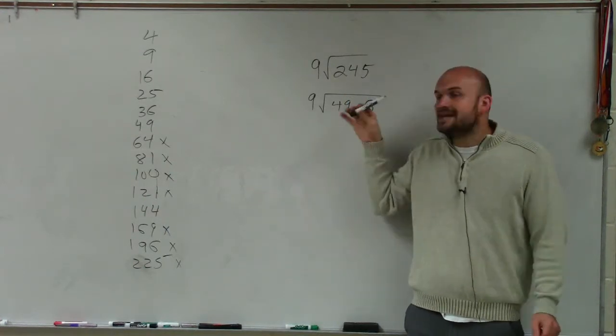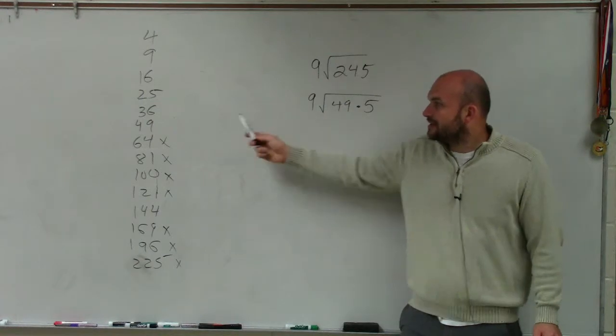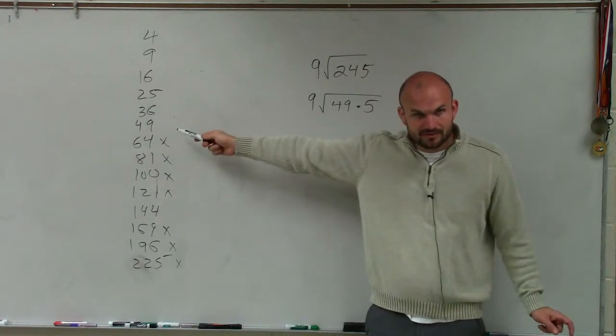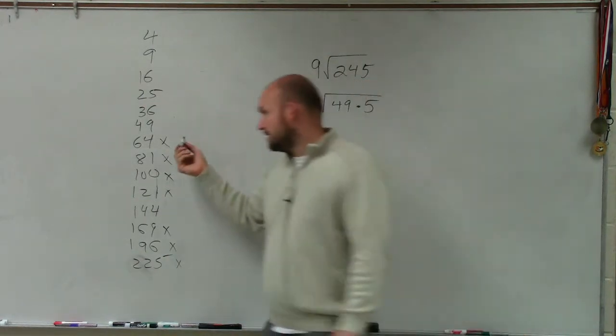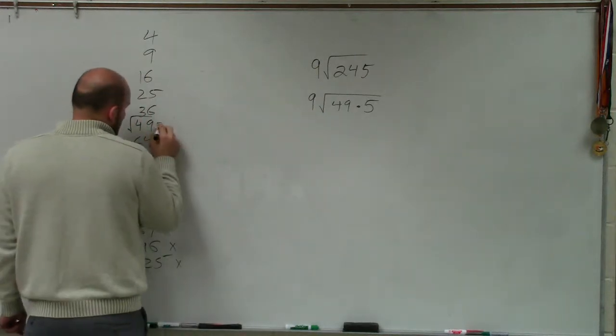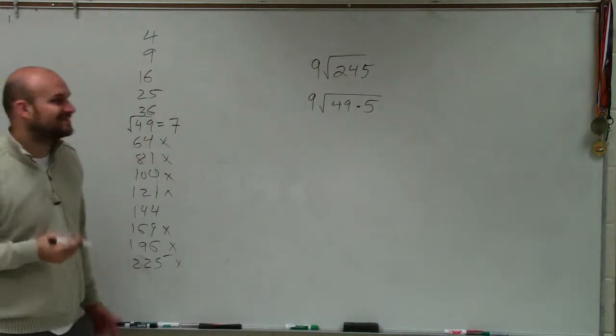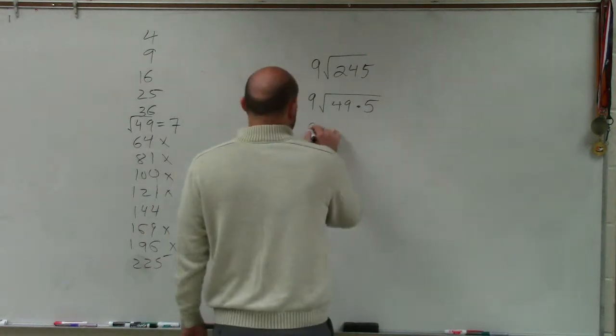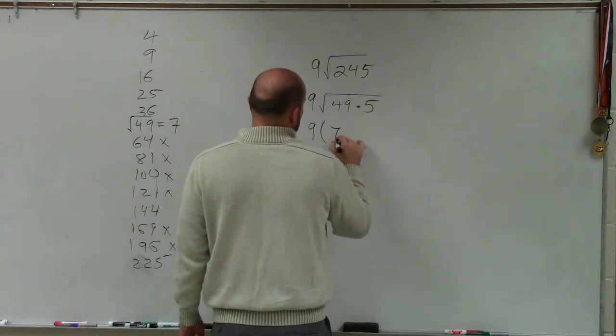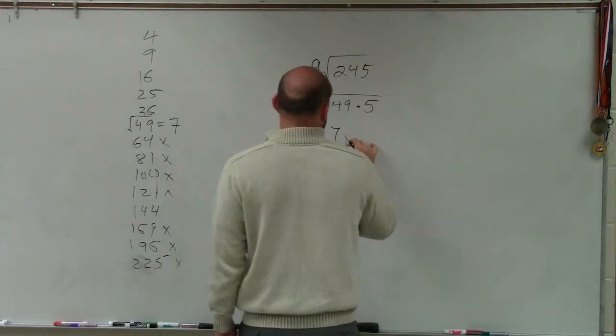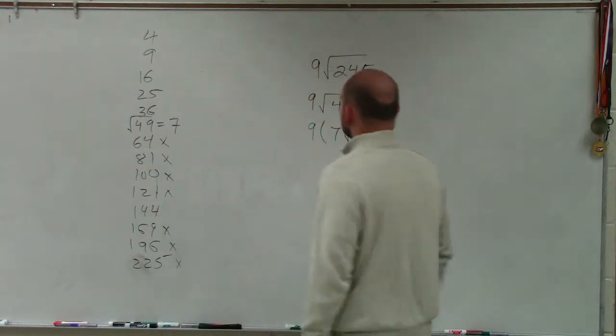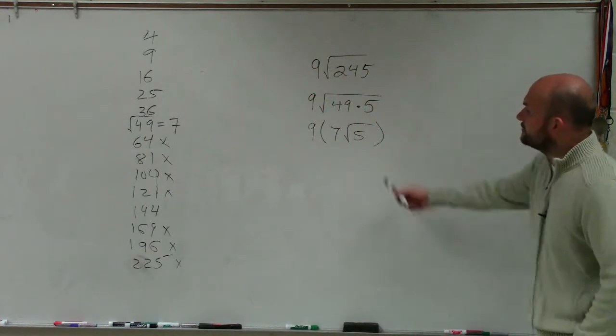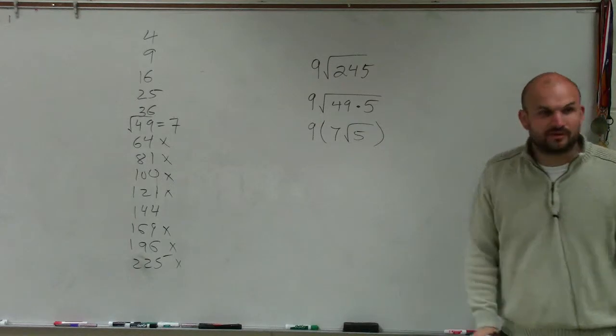But what's important is now I have this square number. Can I take the square root of 49? Yes. Square root of 49 is 7. So I can now write this as 9—I can rewrite this as 7 times the square root of 5.